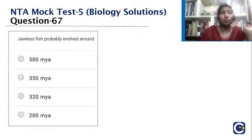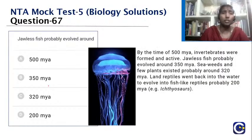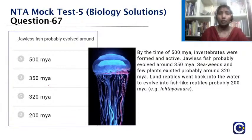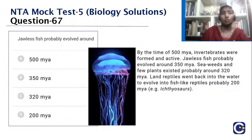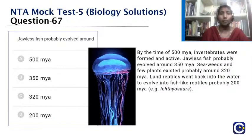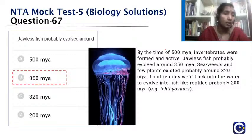Jawless fish evolved around 350 million years ago. Before that, around 500 mya, invertebrates were active. Around 320 mya, seaweeds existed; around 200 mya, land reptiles went back into water to evolve into fish-like reptiles. The right answer is 350 mya for jawless fish evolution.